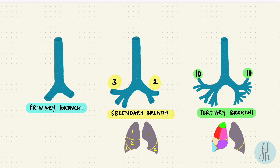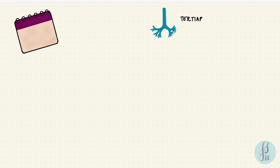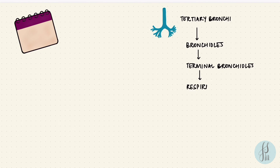By seven weeks we've completed the embryonic stage of development. Further branching is divided into histological stages that overlap, so the week ranges vary by source. To understand this, consider the full respiratory tree from tertiary bronchi: bronchioles, terminal bronchioles, respiratory bronchioles, alveolar ducts, and alveolar sacs.